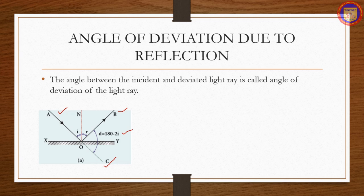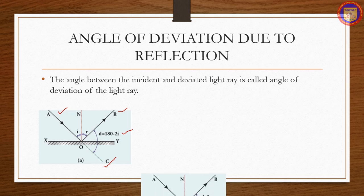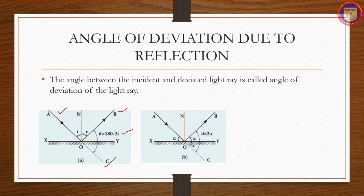From the geometry it is written as d = 180° − (i + r). Since i = r by the law of reflection, substituting gives d = 180° − 2i. The angle of deviation can also be measured in terms of the glancing angle alpha. If the incident ray AO makes glancing angle alpha with the reflecting plane surface XY, then the angle of deviation d equals 2 alpha.